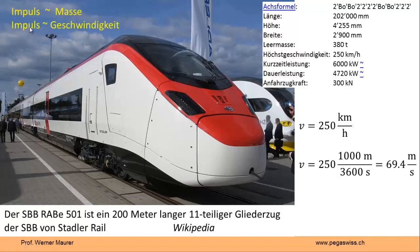Der Impulsinhalt dieses Zuges oder jedes Körpers hängt mit der Masse zusammen, ist sogar proportional zur Masse. Wenn der Zug mehr Wagen hat, entsprechend mehr Masse hat, enthält er bei gleicher Geschwindigkeit auch entsprechend mehr Impuls. Dass der Impulsinhalt proportional zur Geschwindigkeit ist, das ist eine langjährige Erfahrungstatsache.